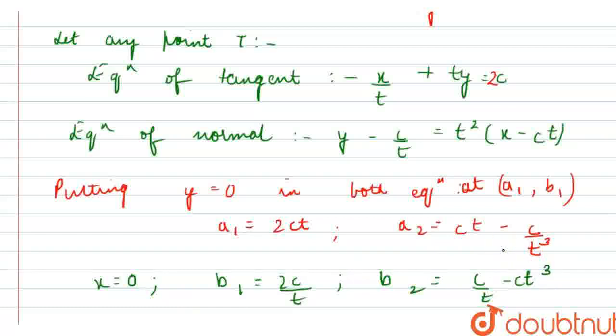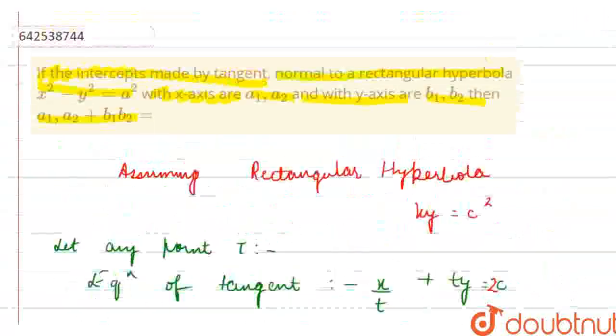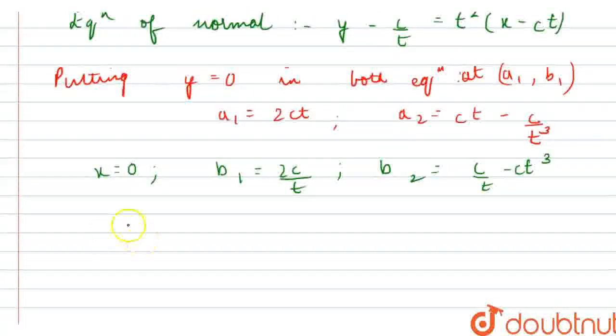So, these are the equations of the normals and the tangents when we are putting x and y equal to 0 simultaneously. Now, what we have to find? We have to find a1a2 plus b1b2. So, it implies a1a2 plus b1b2.